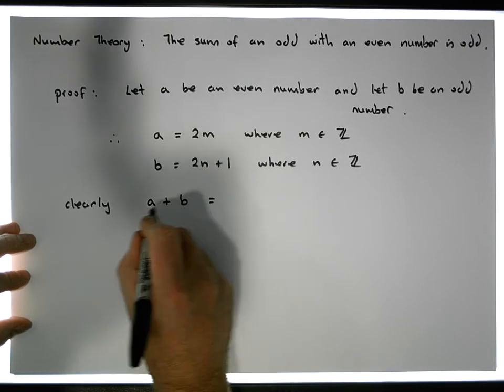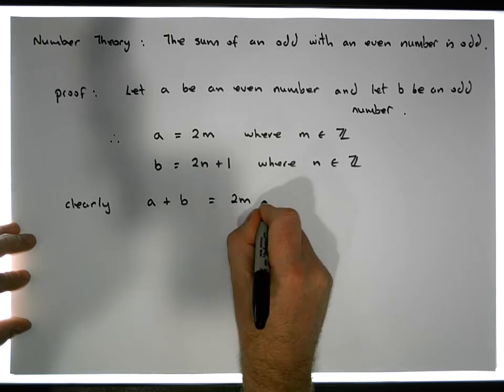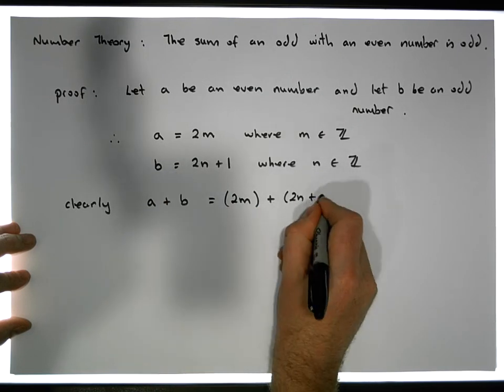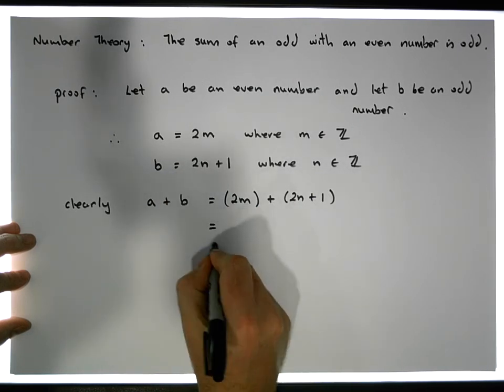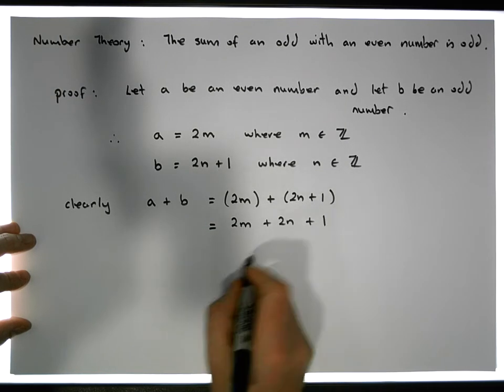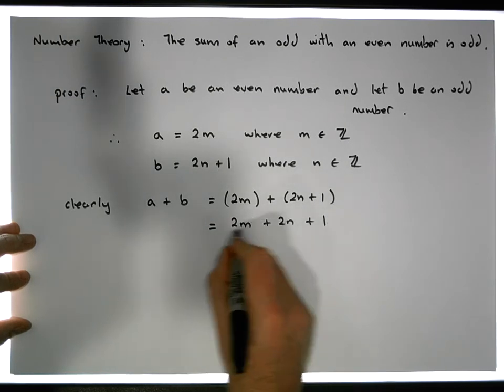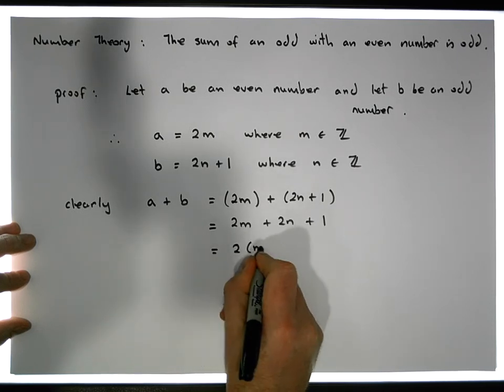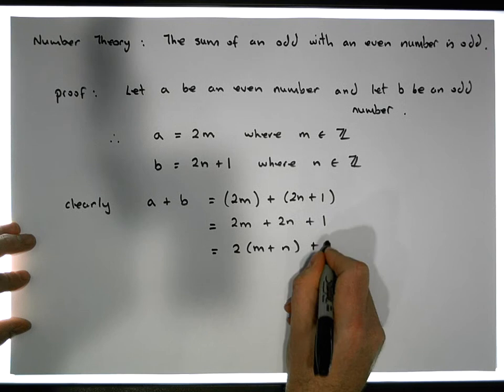Is equal to A is two M, plus B, which by definition we're saying is equal to two N plus one. Let's remove the brackets. What do we get? We get two M plus two N plus one. And there's a common two across these two particular terms here, so this is equal to two times M plus N plus one.